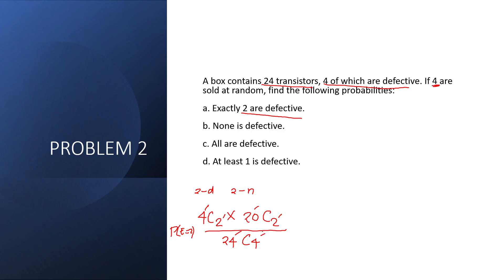So we have 4 combination 2 times 20 combination 2, over 24 combination 4 as the sample space. The remaining two transistors come from the 20 non-defective ones. Computing: 4C2 times 20C2 over 24C4 equals 190 over 1771. This is the answer for letter A — exactly two are defective.